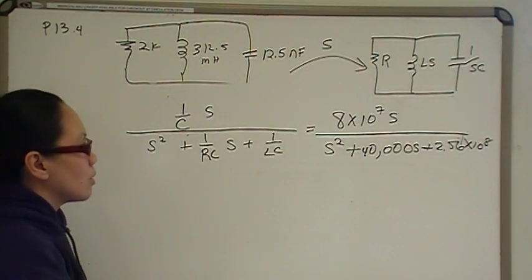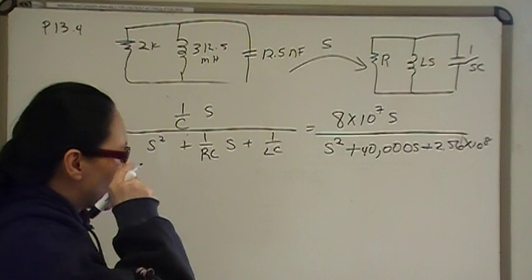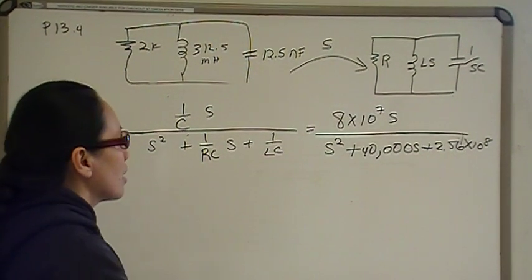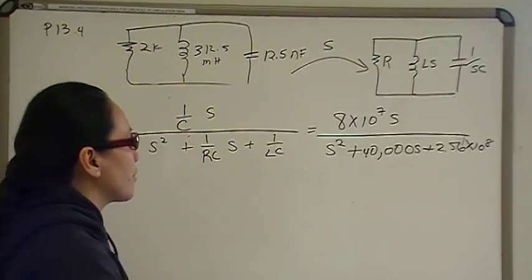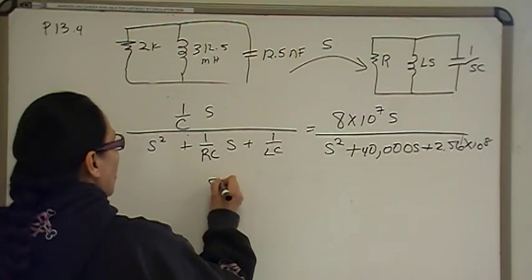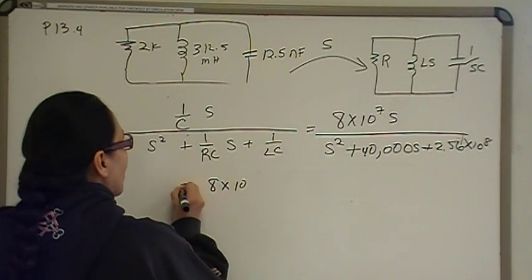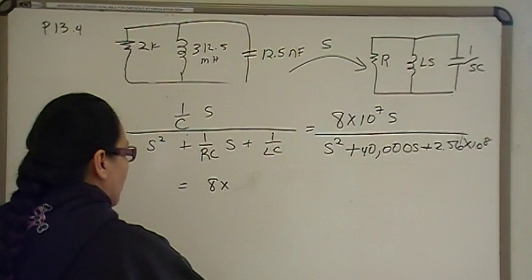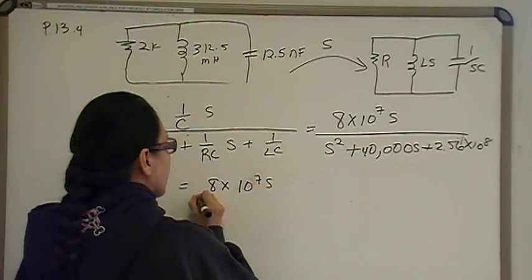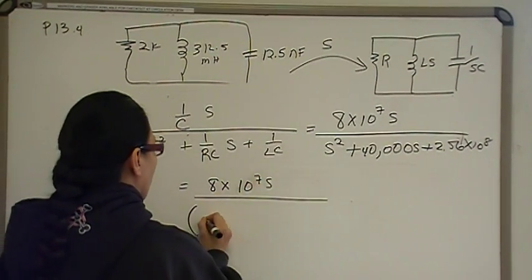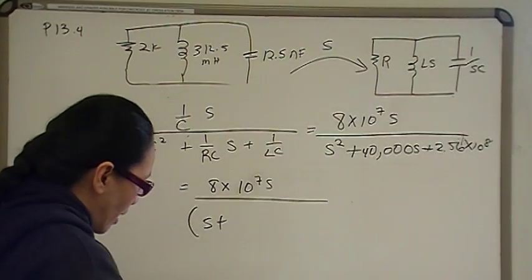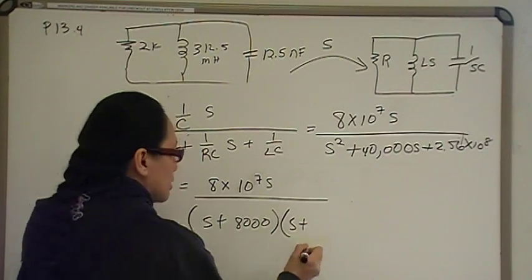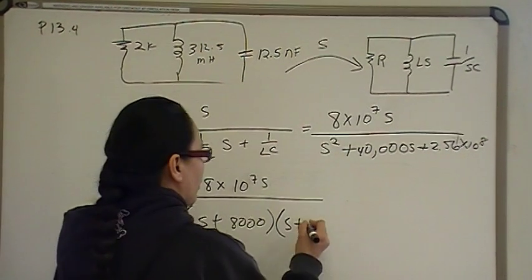So your calculator, if you're an engineering major, you should probably have some kind of scientific calculator that can do factoring. So, I just plug this into the factor function, and it factors it for me. So, this factors out into 8 times 10 to the 7th S times S plus 8,000 times S plus 32,000.